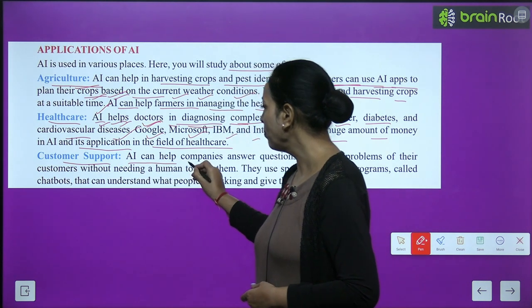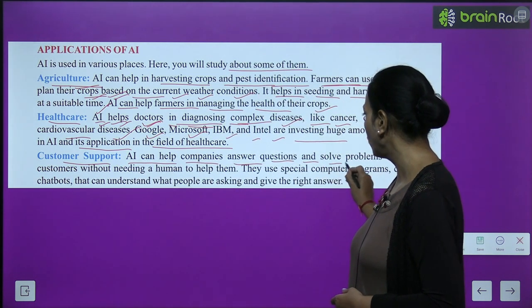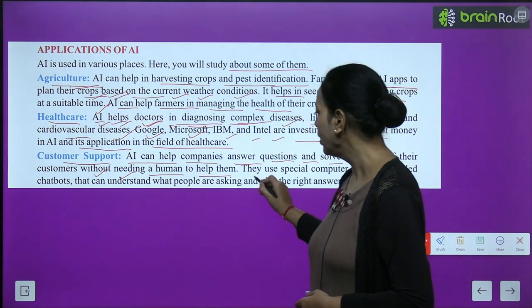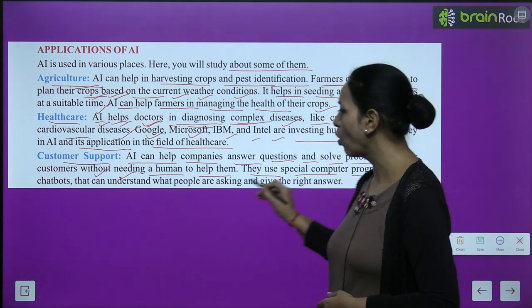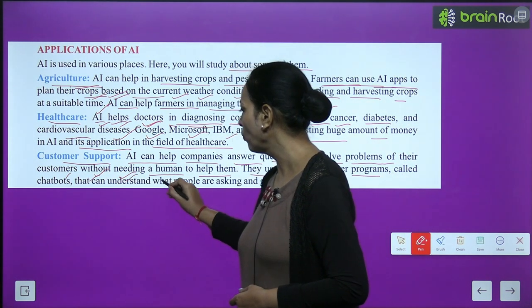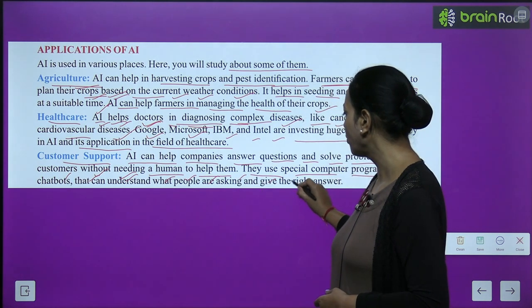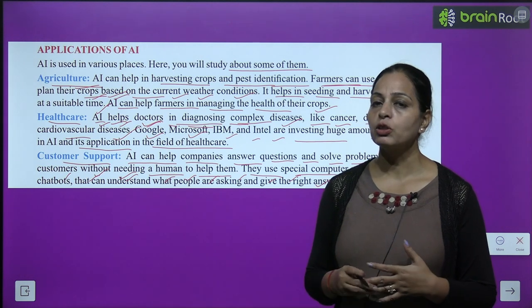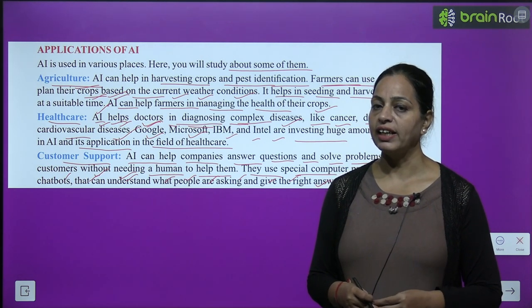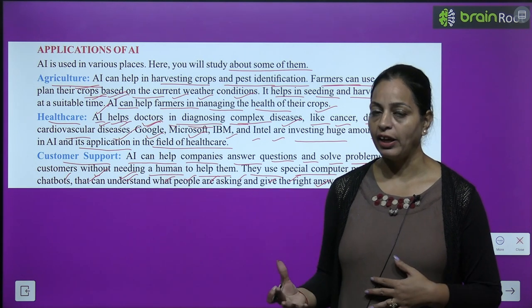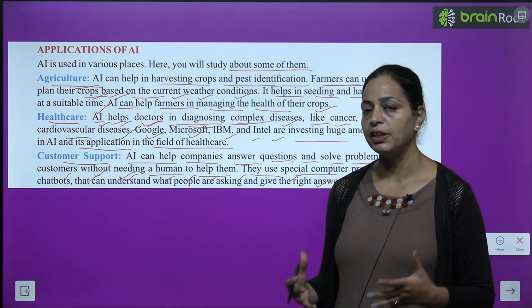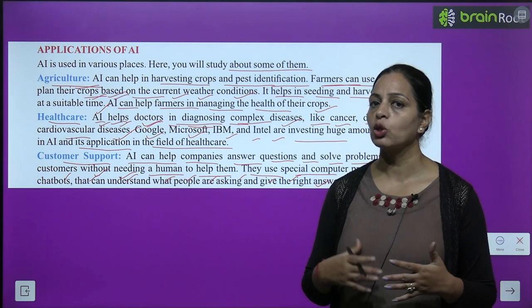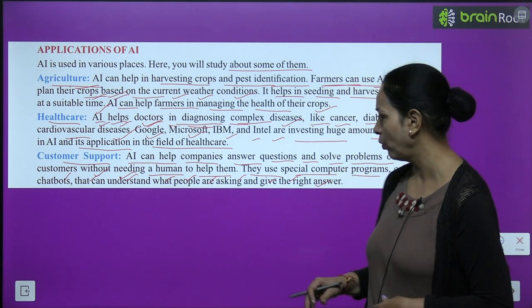Customer support. AI can help companies answer questions and solve problems of their customers without needing a human to help. They use special computer programs called chatbots that can understand what people are asking and give the right answer. Companies use AI chatbots so that customers' queries and questions can be solved automatically.